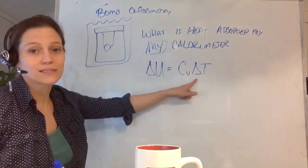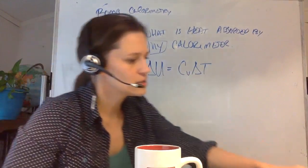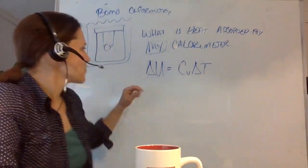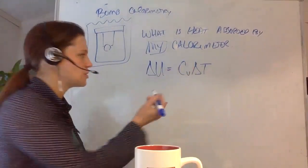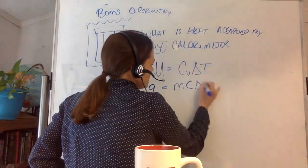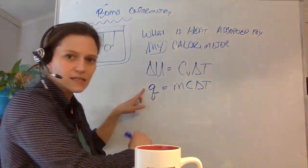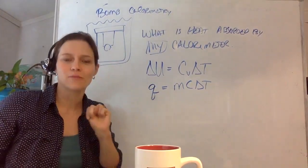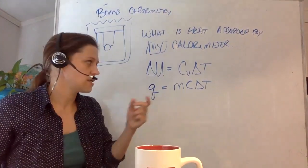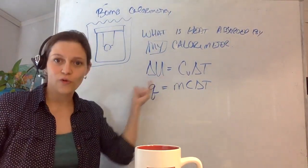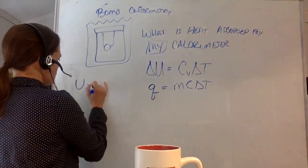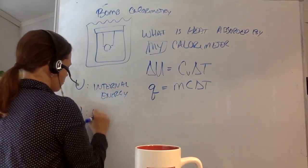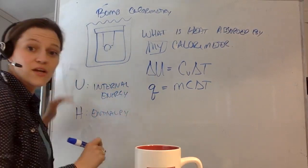Delta U is equal to Cv * delta T. Delta U is actually Q = mc * delta T in disguise. This is heat. Typically when you saw this in Chem 116, we didn't classify what kind of heat this was — there are two types. The way that we as chemists quantify heat, it's either as the internal energy U or the enthalpy H. U is internal energy, H is your enthalpy — very specific distinctions.